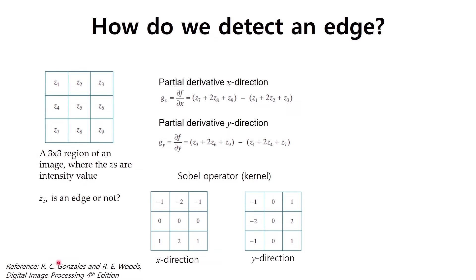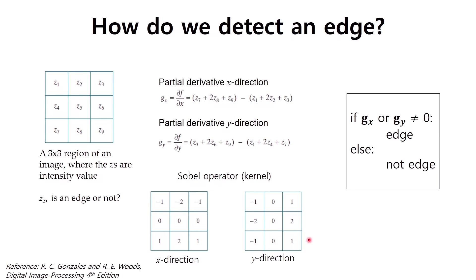If you read the textbook, we can easily detect an edge in a two-dimensional image using a Sobel kernel, also called the Sobel operator. Here is the Sobel kernel to detect edges in the x direction, and this one is the Sobel kernel in the y direction. After we calculate the difference, if Gx or Gy — the difference in the x direction as well as in the y direction — is not equal to zero,